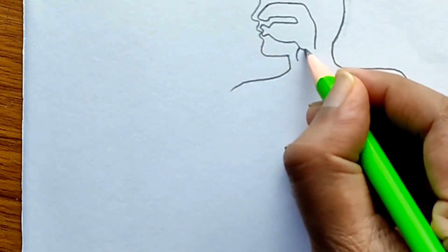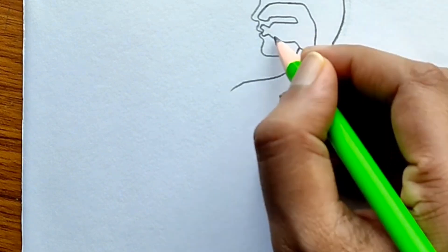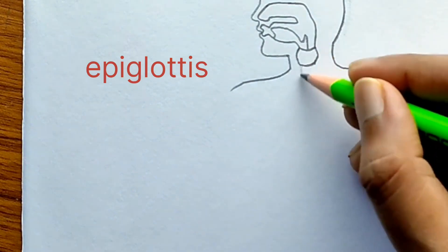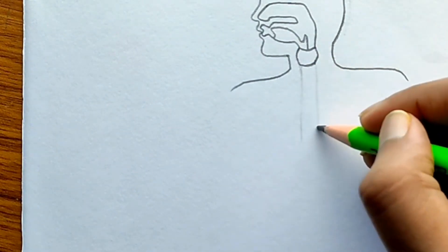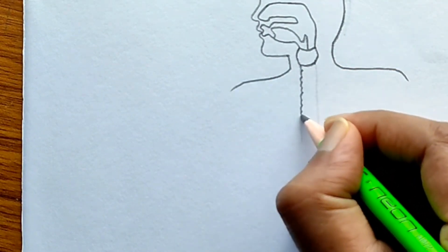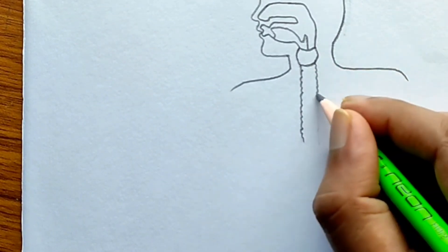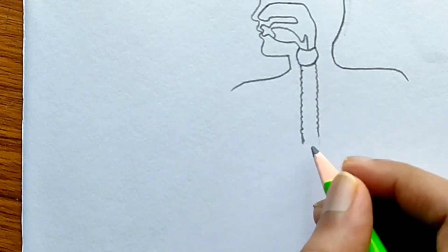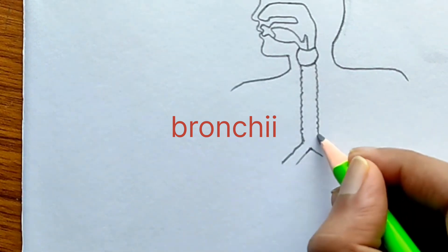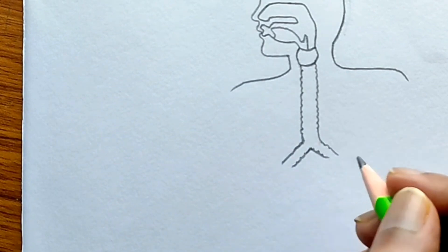The pharynx leads into the esophagus in the case of the digestive system. Here we can observe a small leaf-like structure called the epiglottis, which separates the opening of the esophagus from the trachea. The function of the epiglottis is to prevent the entry of food into the trachea and to prevent the entry of air into the esophagus — if air enters the esophagus during eating it causes choking, and if food enters the trachea it causes choking as well.